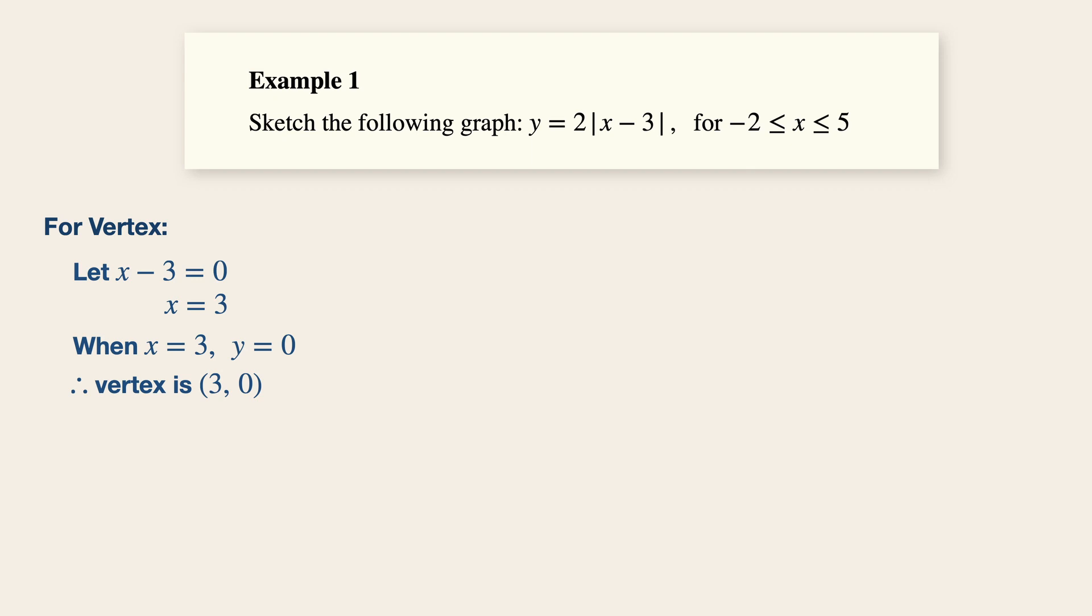Now coming on to step number two, find the y-intercept or the point where the graph cuts the y-axis. In your working, you could write for the y-intercept, when x is equals to zero, y is equals to two modulus minus three, and this will give us a value of six.